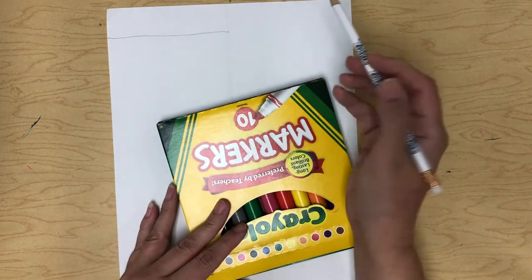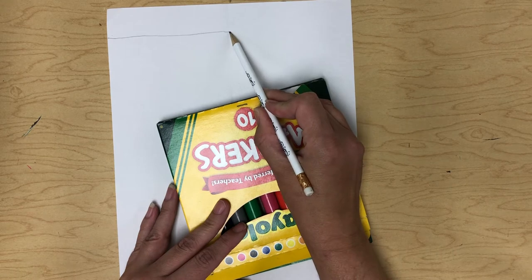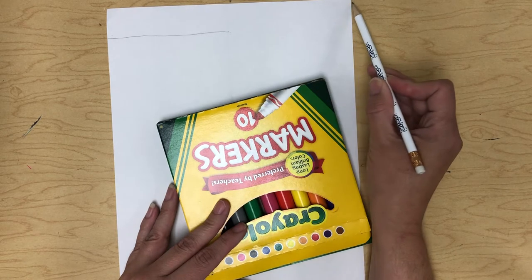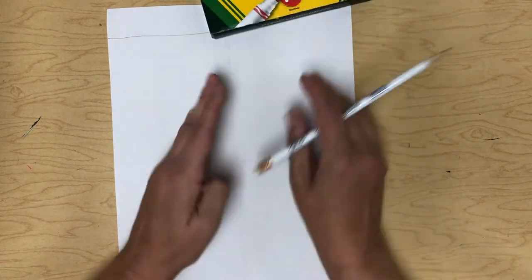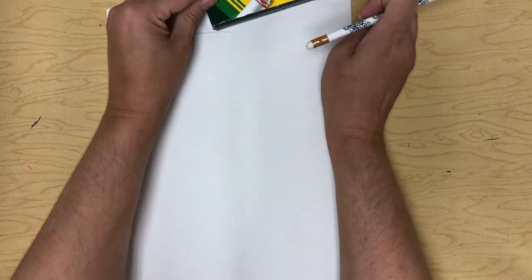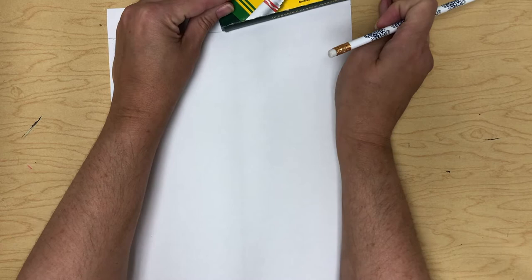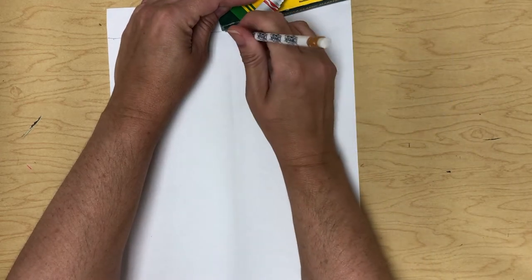On this side we're going to take this spot here and draw a line all the way up to the corner. So I can actually use my box right now for that. I can line it up, take my pencil and draw my line like that.